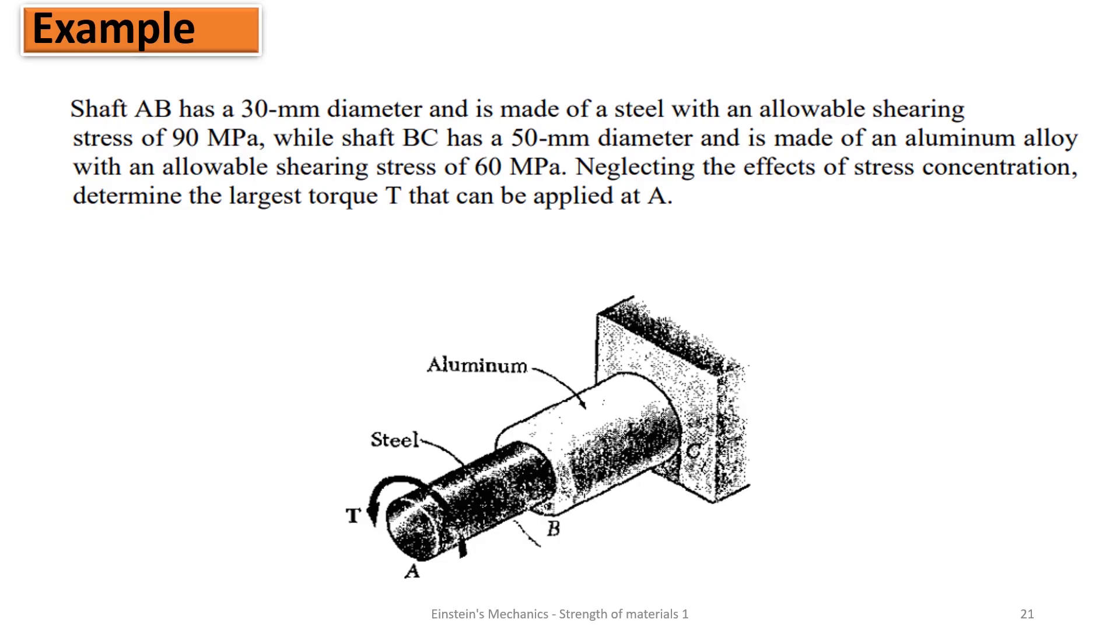Now, shaft AB - this is A, this is B. Let's call here, it's also C. So, shaft AB has a 30 mm diameter, and it is made of steel with an allowable shearing stress of 90 MPa, while shaft BC is 50 mm diameter, and it's made of aluminum alloy with allowable shearing stress of 60 MPa.